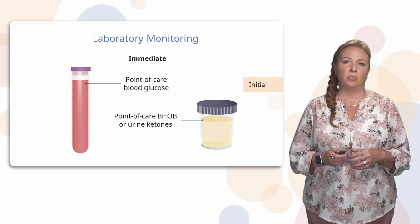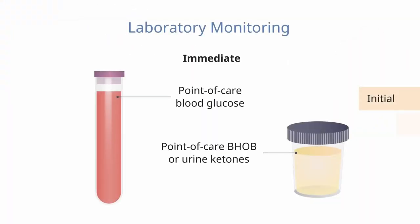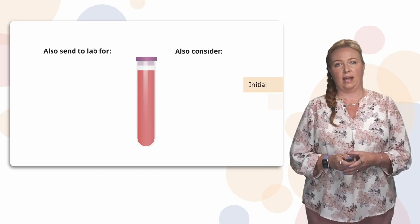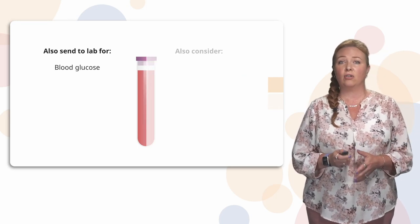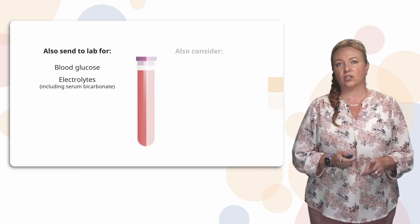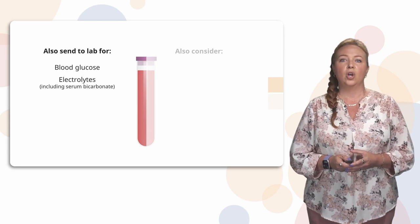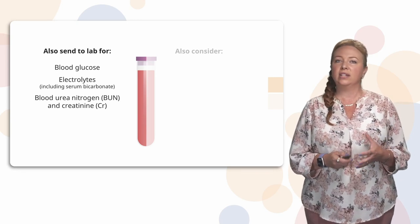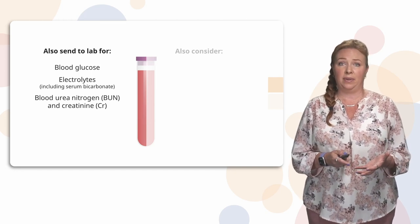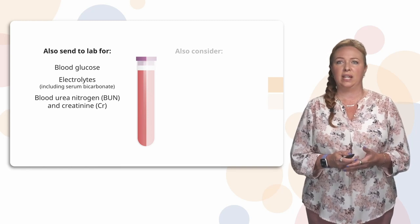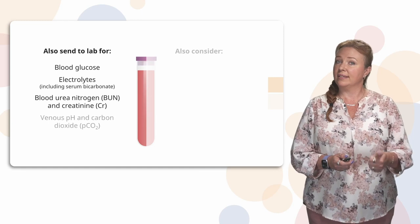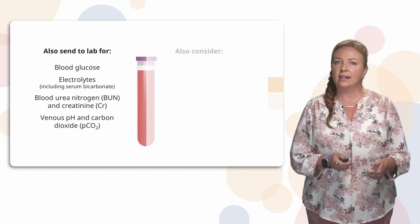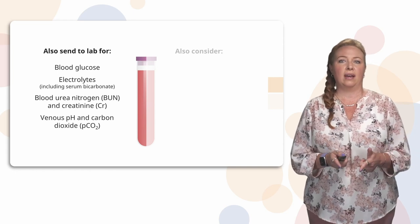Eventually, you'll start sending samples to the lab, but initially we want to get results as quickly as possible. While doing this, we'll also send a blood glucose to the lab as a reference point, along with electrolytes including serum bicarbonate, and a BUN and creatinine — the blood urea nitrogen and creatinine level. These indicate how dehydrated the patient might be and help determine how much fluid to give. We'll also send a venous blood gas to check the pH and carbon dioxide.